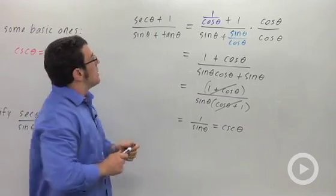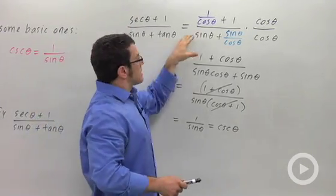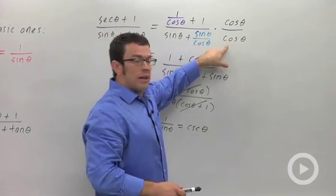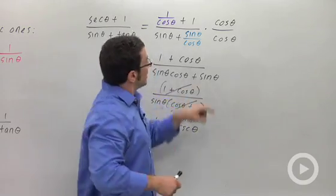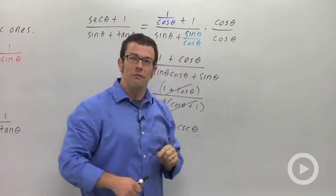Don't forget, if you're dealing with reciprocal trig functions like secant and tangent, sometimes it's best to switch to sine and cosine. And don't forget this trick. When you have complex fractions, you can do what we call fraction busting. Multiply by the common denominator of the little fractions.